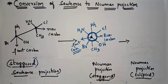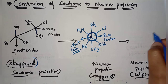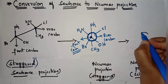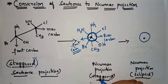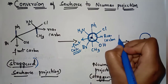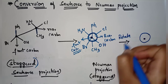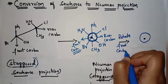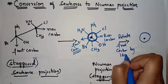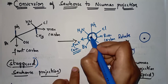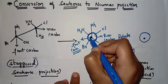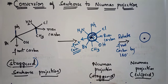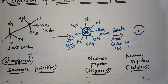Now we need to convert this Newman projection staggered form into Newman projection eclipsed form. Let's first draw the eclipsed form with the front carbon and rear carbon. To convert staggered to eclipsed, we rotate the front carbon by 180 degrees. The dot represents the front carbon, so we rotate those groups by 180 degrees.